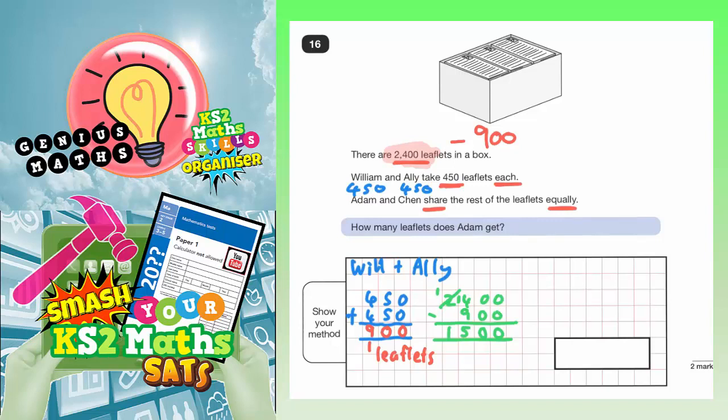This 1,500 leaflets is basically what Adam and Chen have got between them. Adam and Chen share the rest of the leaflets equally. This rest of the leaflets is the 1,500 that we just worked out. Because we're sharing them equally, that means we need to divide by 2 because there are 2 people. What we need to do is 1,500 divided by 2.